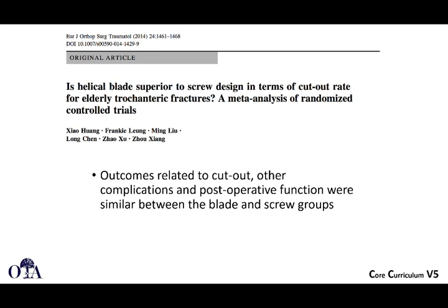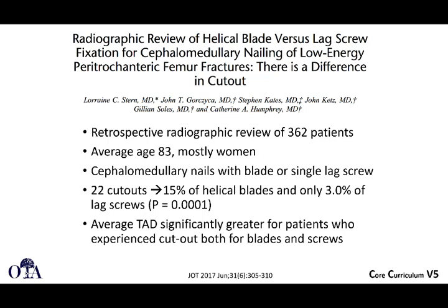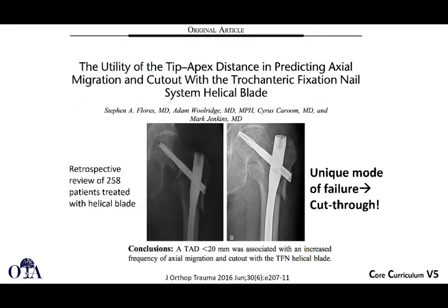A meta-analysis of randomized controlled trials showed cutout complications were similar between devices. Another retrospective review of 362 patients showed slightly higher cutout rates with helical blades compared to lag screws, and that was statistically significant. Patients who did have cutout had a significantly greater average tip apex distance — for both blades and screws. So again, tip apex distance should be less than 25 millimeters.